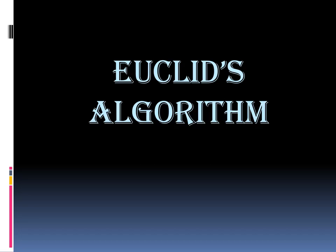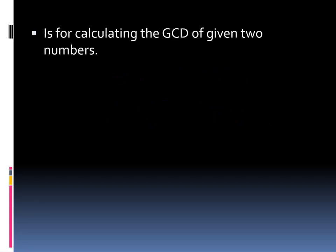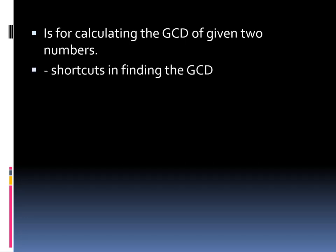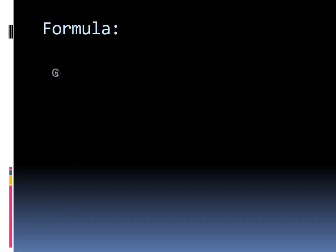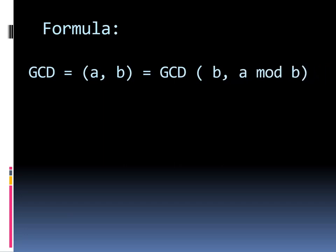In applying Euclid's algorithm, this is the best way to easily get the greatest common divisor. Euclid's algorithm is used for calculating the GCD of two given numbers — it is another shortcut for finding the greatest common divisor. We have the formula for the GCD using Euclid's algorithm.